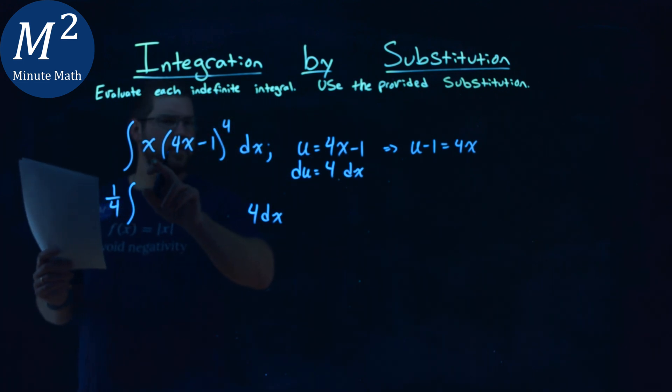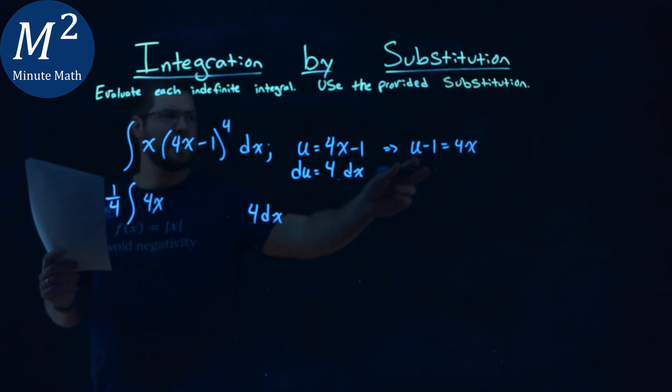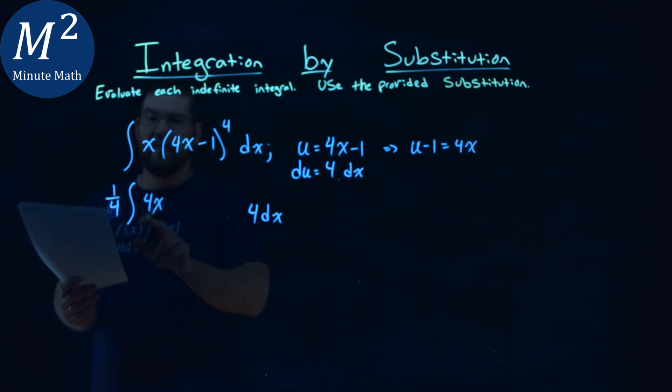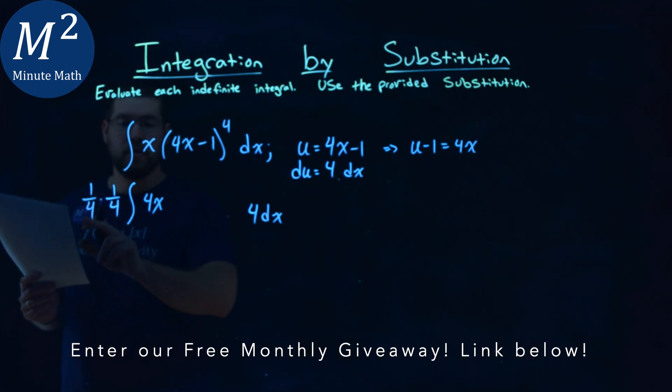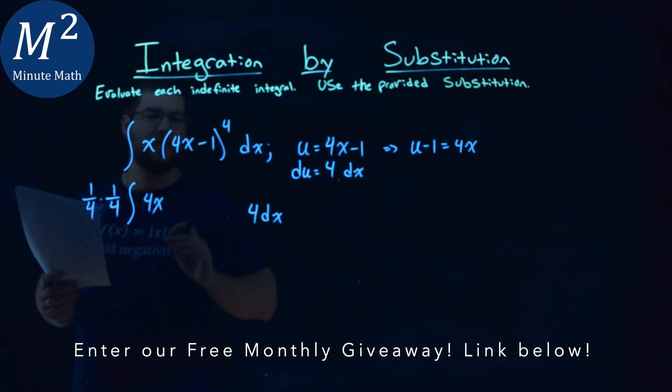So instead of an x, if I just put a 4x here, I know I can substitute that to be a u minus 1. But I can't just create another 4 right there without canceling it out. And I put another 1/4th out front. Notice, 1/4th times 4 gives me just a 1, and we're still fine, we still have the same integral.